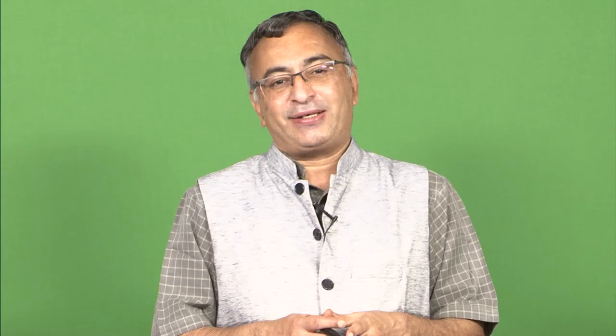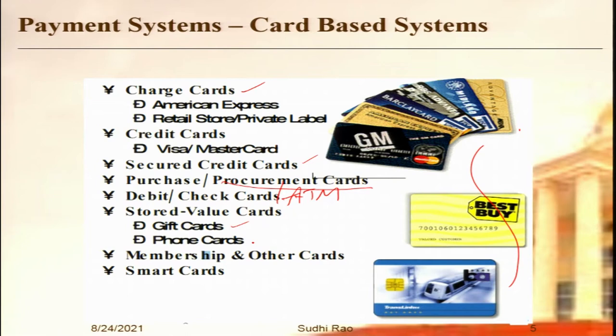Then we have stored value cards — cards which have a certain amount of value stored in them. We can use them in designated places and as we make purchases, the value reduces to zero. Typically, gift cards are an example — like an Amazon gift card for 5,000 rupees, usable to buy items worth that amount. And there are phone cards, especially popular among immigrant communities in the US — instead of buying a phone line, you buy a phone card, use a public phone, call a free number, and that phone card covers the call cost.